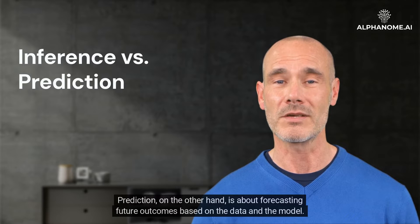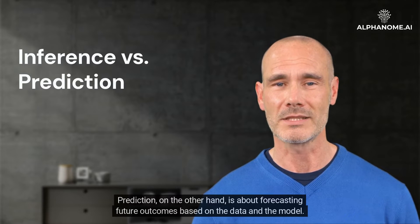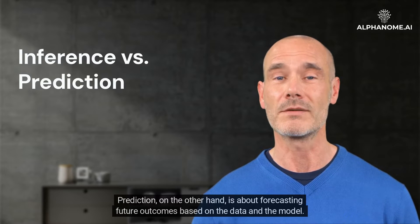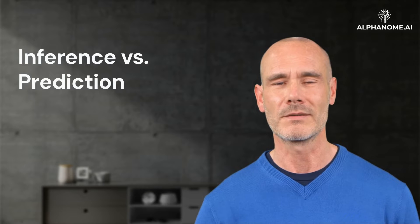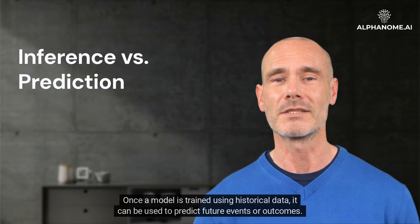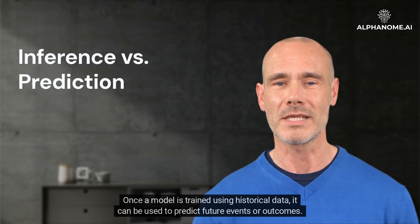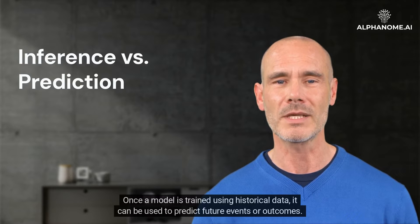Prediction, on the other hand, is about forecasting future outcomes based on the data and the model. Once a model is trained using historical data, it can be used to predict future events or outcomes.